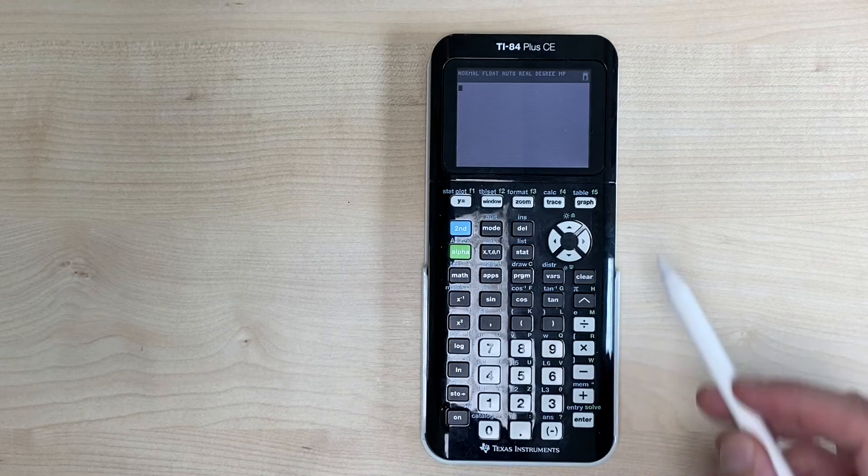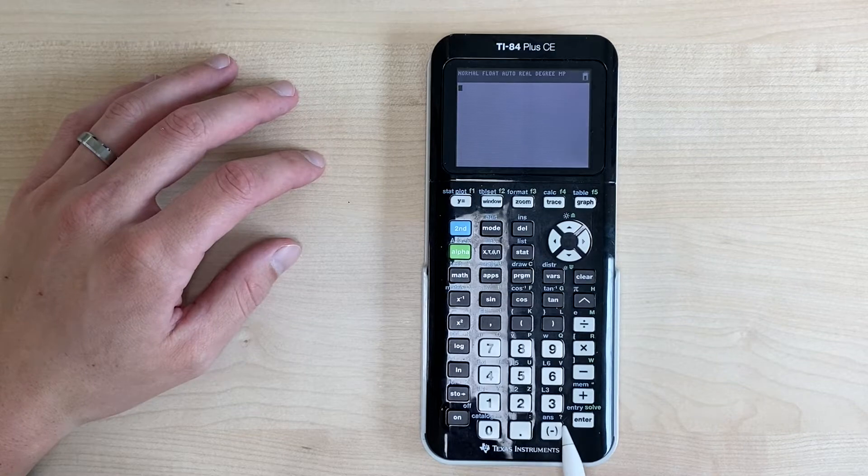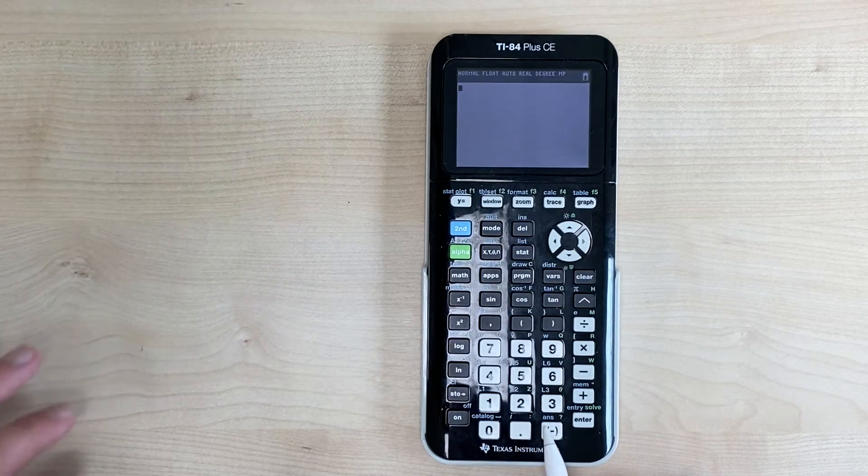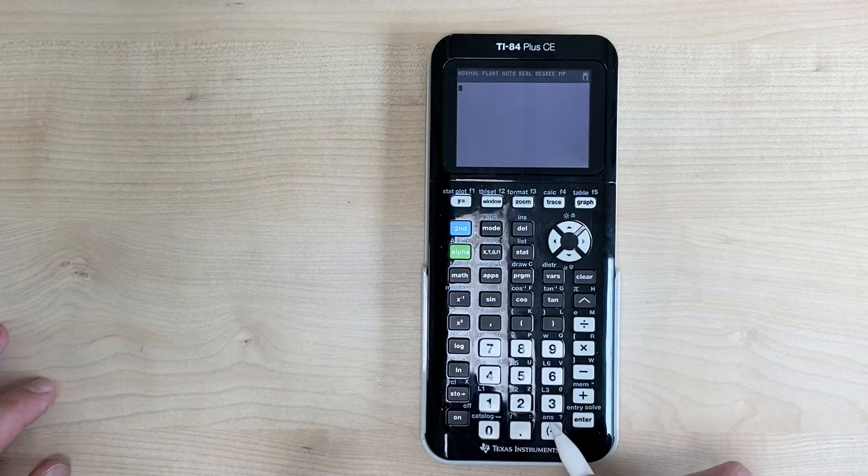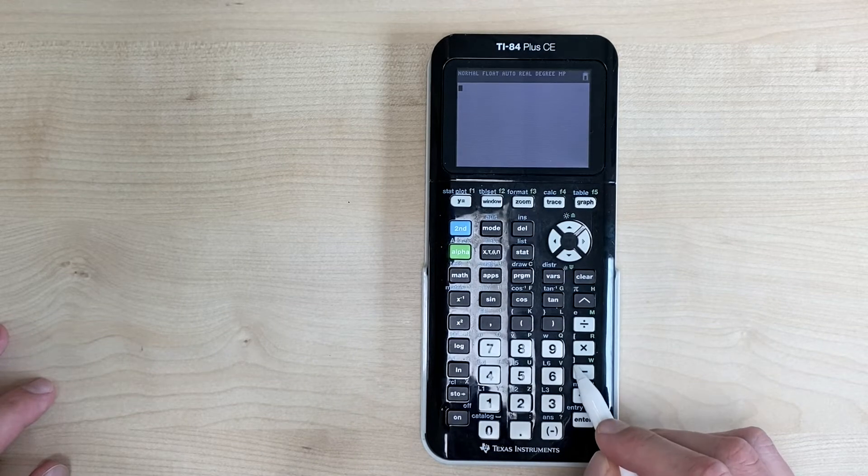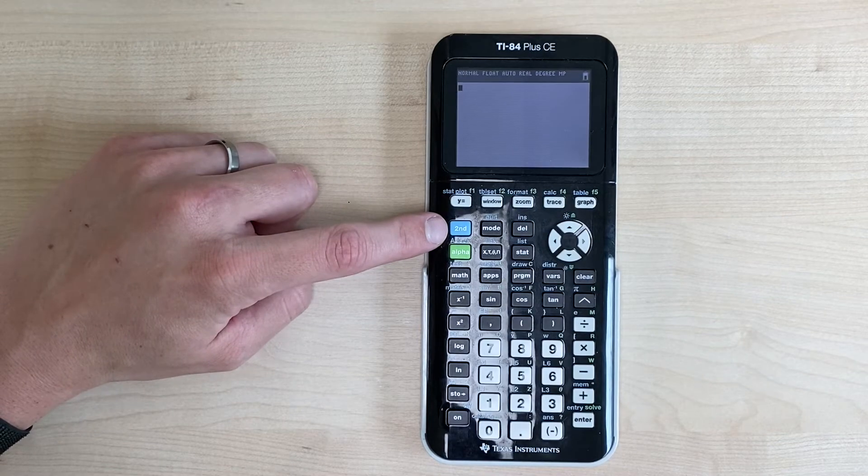Looking at our calculator screen we see down here at the bottom the negative button. Right above the negative we see this ANS and on your graphing calculator anything that's blue above a button calls for us to hit the second key in order to access that feature.